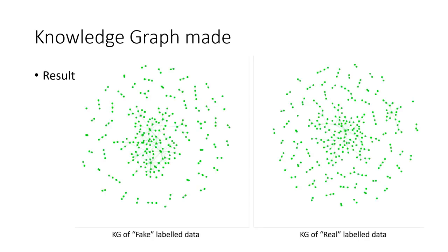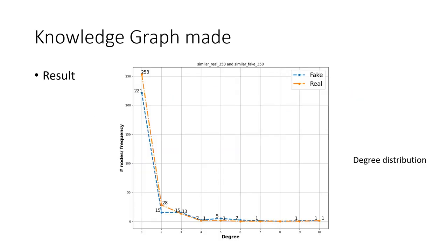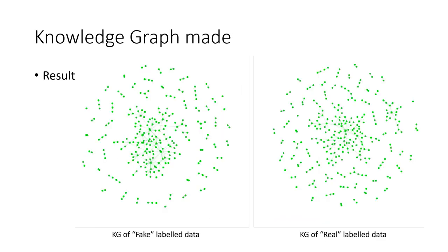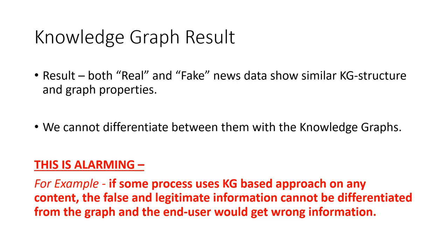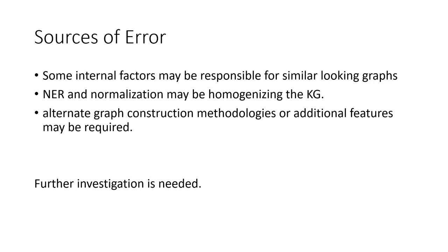The resultant graphs and their degree distributions show that both real and fake news data produce similar knowledge graph structures and properties. We concluded that we cannot differentiate between them using knowledge graphs alone. This is alarming because search engines and recommendation systems use knowledge graph-based approaches, meaning false information could propagate undetected. There may be errors in our approach — the NER normalization step, although unintended, may be homogenizing the graphs. Alternate graph construction methodologies or additional features may need to be incorporated, and further investigation is needed.